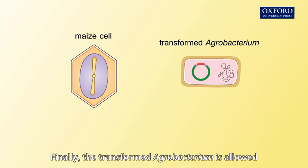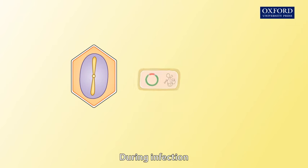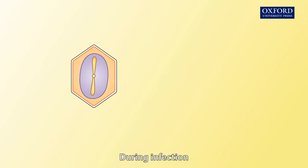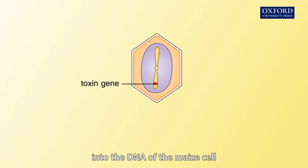Finally, the transformed agrobacterium is allowed to infect a maize cell. During infection, the bacterial toxin gene is integrated into the DNA of the maize cell.